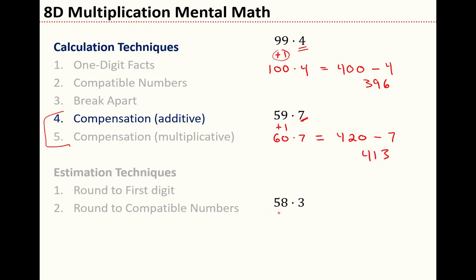Last example. 58 times 3. Now I'm not right up against 60. I need to add 2 to get 60. But when I multiply times 3, I get 180.